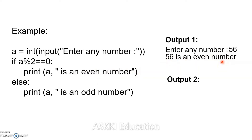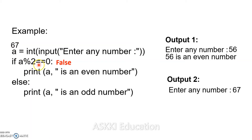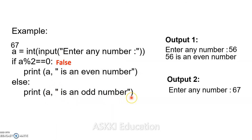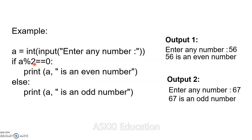For another example, if the user gives the value as 67, then 67 mod 2 equals 1. Since 1 is not equal to 0, the condition is false. The control goes to the else part and executes the else block, printing '67 is an odd number.' This demonstrates the if-else control structure: if the condition is true, the true block executes; if false, the else block executes.